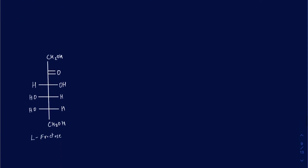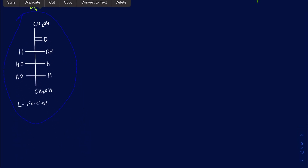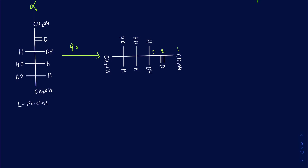Let's talk about another sugar — I have L-fructose here. First, rotate this by 90 degrees. It's going to be 1, 2, 3, 4, 5, and 6. You'll have an OH at the 5 prime position. The group at chiral center 5 and the carbonyl at number 2 are going to be attacking one another to make, in this case, a 5-membered ring.